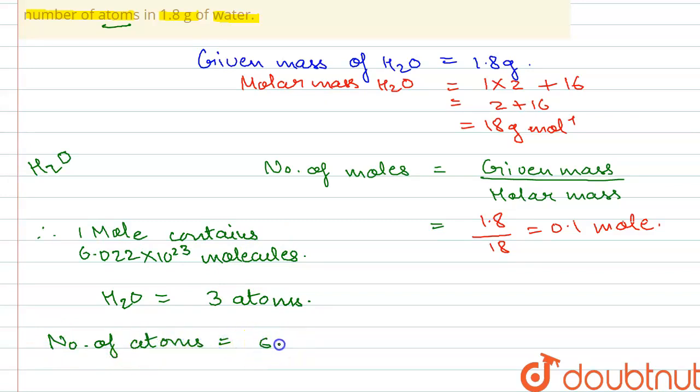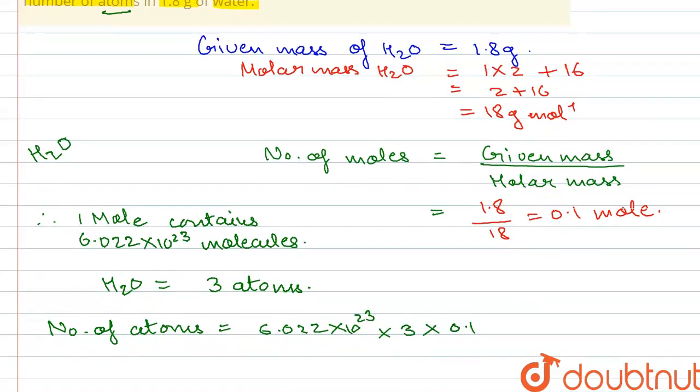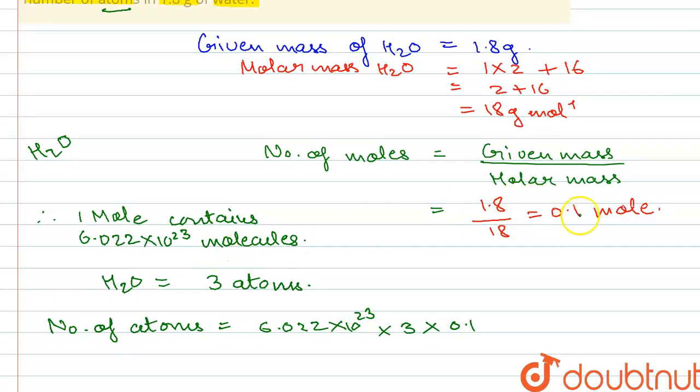will be equal to 6.022 × 10^23 × 3 × 0.1 moles (the number of moles present). We have to calculate the molecules present in 0.1 mole, because the value given is for one mole, but we want the number